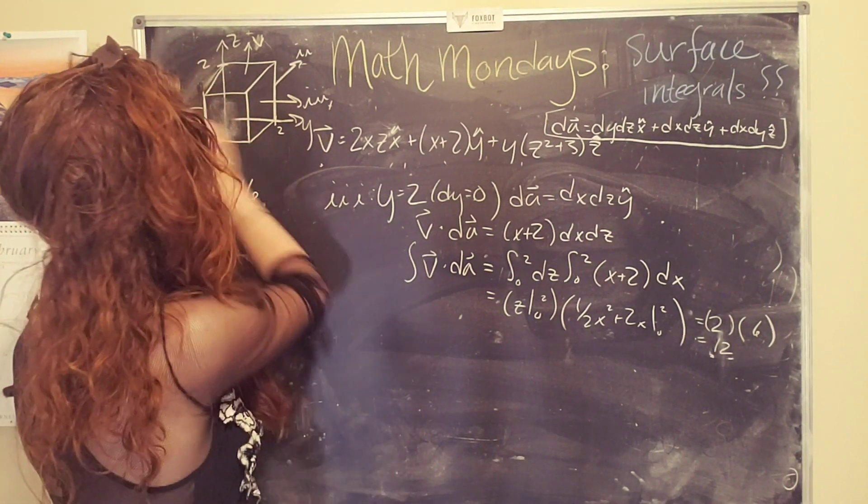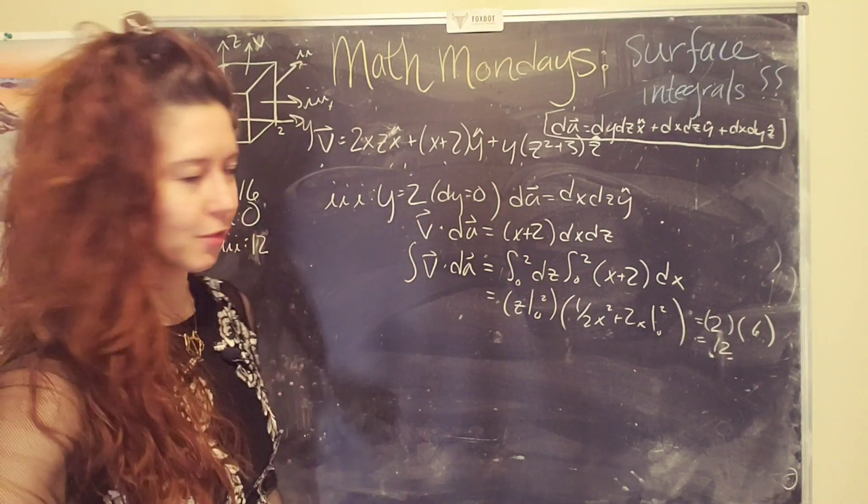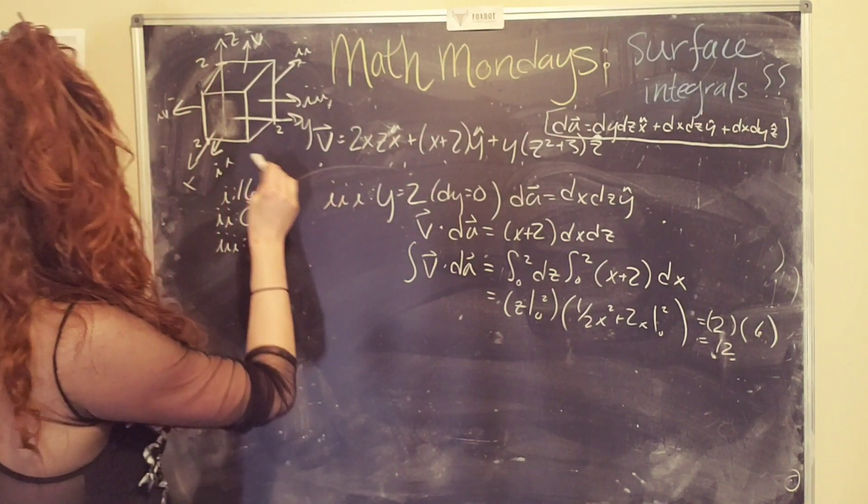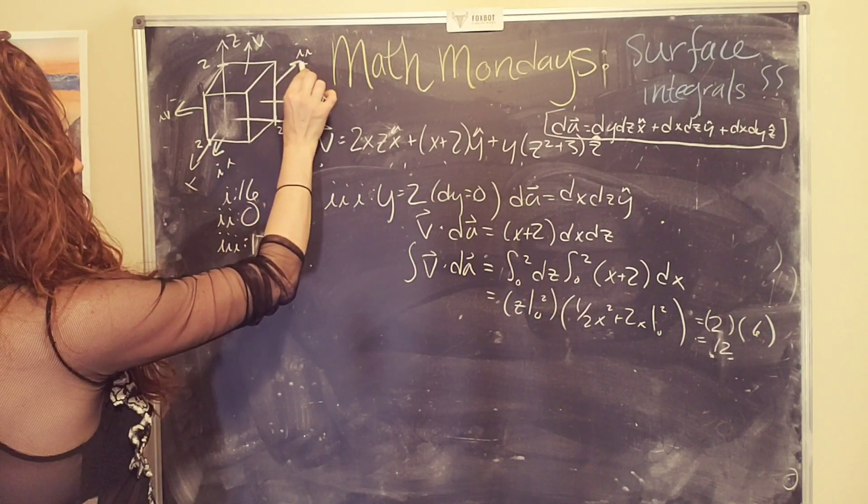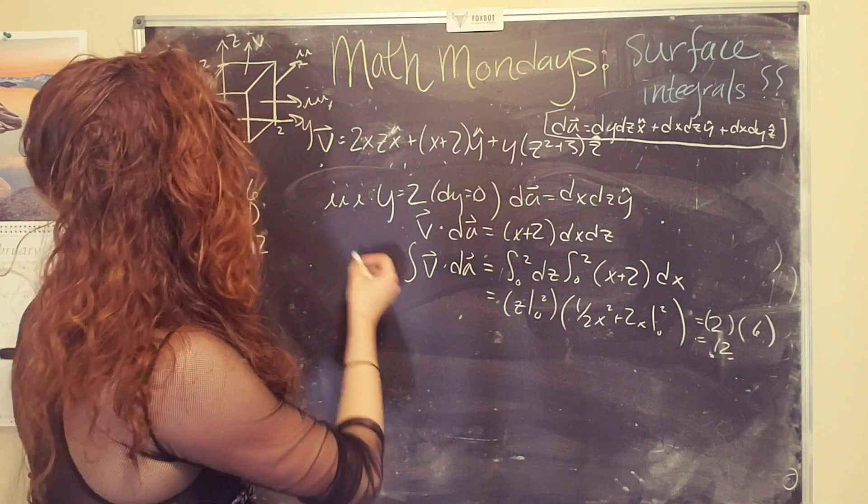So now let's do surface four, which goes this way. Oh, the thing I forgot to mention. Ah, speaking of going too fast. So, this back surface should have had a negative, that's so excited because I went to zero. Okay.